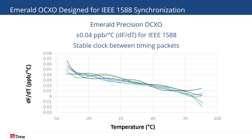Our industry-leading MEMS technology combined with unique advances in packaging allow the Emerald OC-XO just 40 ppt frequency over temperature slope. The ultra-low frequency over temperature slope of the OC-XO ensures the front-haul switch has a stable timing reference between timing packets. Its minimal reaction to fast temperature change makes Emerald the ideal choice when implementing IEEE 1588 timing.